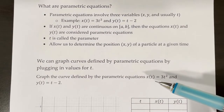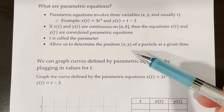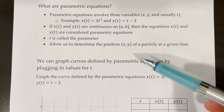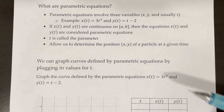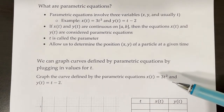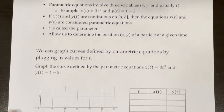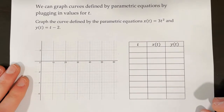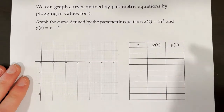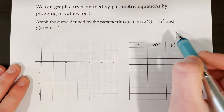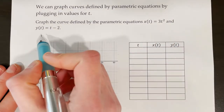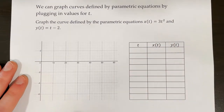Parametric equations allow us to determine the position — the (x, y) position in the coordinate plane — of a particle at a given time. We can graph curves defined by parametric equations by plugging in different values for t. Let's graph the curve defined by x(t) = 3t² and y(t) = t − 2.